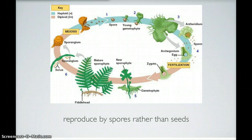There are three stages to the life cycle. In stage one, mature plants release tiny spores into the air, which are carried for an unknown distance by the wind. In order to develop into the next stage, which is a gametophyte, the spore must settle on moist soil.